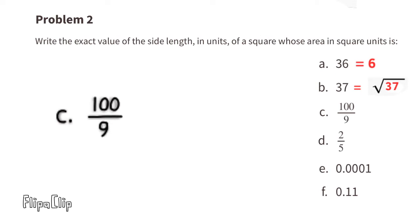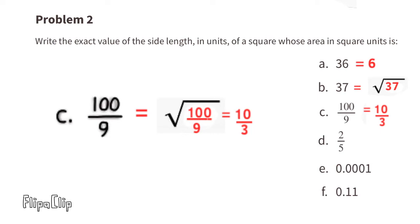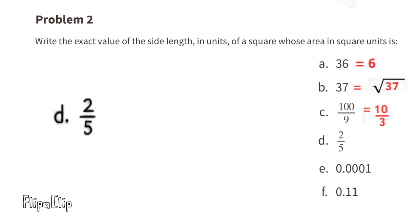Let's find the square root of 100 ninths. I know that 10 times 10 equals 100, so we can replace the numerator with 10. And 3 times 3 equals 9, so we replace the 9 with 3. The side length is 10 over 3, or ten-thirds units.